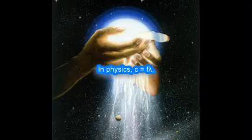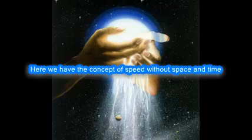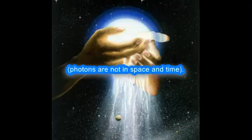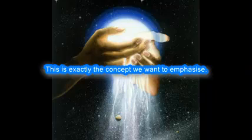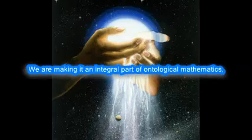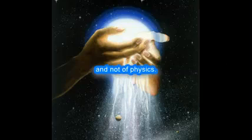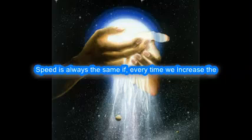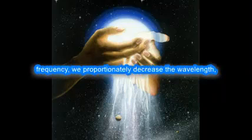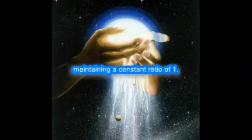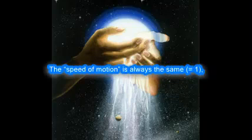In physics, c = fλ. Here we have the concept of speed without space and time. Photons are not in space and time. This is exactly the concept we want to emphasize. We are making it an integral part of ontological mathematics, and not of physics. Speed is always the same if, every time we increase the frequency, we proportionately decrease the wavelength, maintaining a constant ratio of 1. The speed of motion is always the same, equals 1.